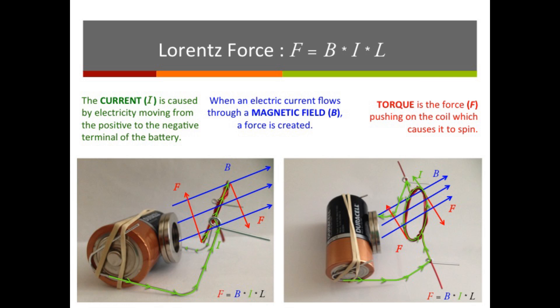This force is called the Lorentz force. When an electric current flows through a magnetic field, a force called torque is created that pushes on the coil which the current is flowing through and causes it to spin. The strength of the force is the product of the magnetic field, the current, and the length of the wire.